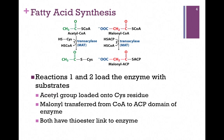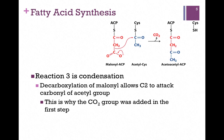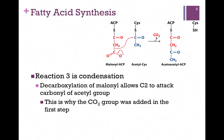Both have a thioester link to the enzyme. Now we're ready to condense these two molecules. Our goal is to form an even-numbered chain, so we're actually only going to condense two acetyl groups — that carboxyl group is going to come off. Decarboxylation of malonyl allows carbon number two to attack the carbonyl carbon on the acetyl group, thereby adding it to the chain growing on acyl carrier protein. We've decarboxylated and lengthened our chain to an even-numbered four-carbon chain. This is why we added that CO2 in the first step catalyzed by acetyl-CoA carboxylase — so that we can condense these two molecules using that CO2 as a good leaving group.